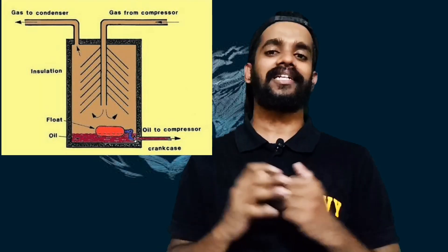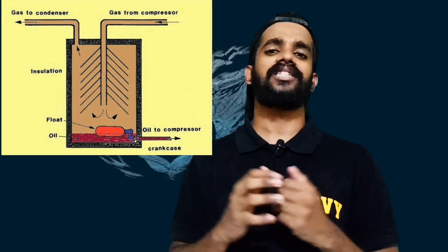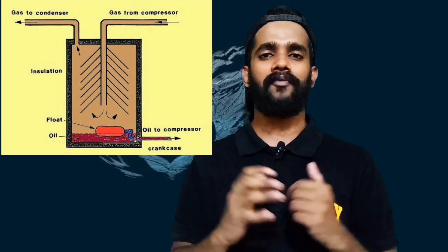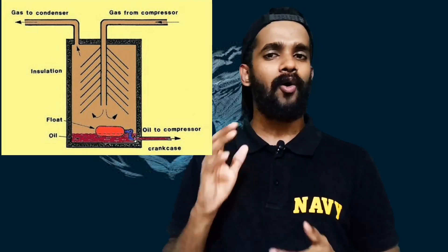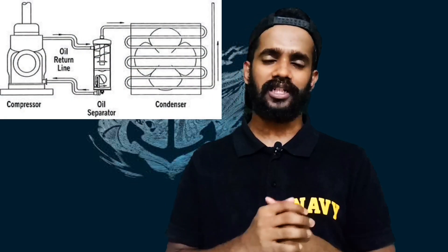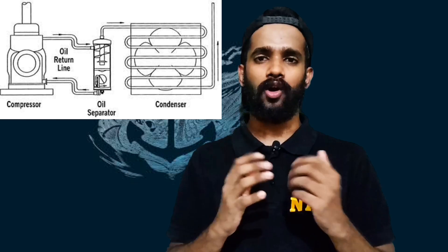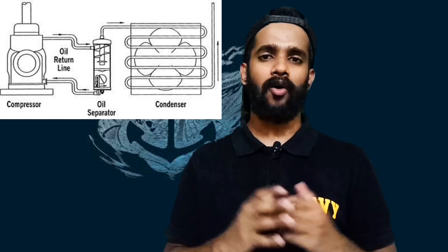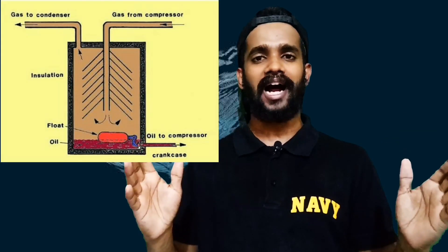You can now see a typical oil separator on screen. It is an impingement type of oil separator which has baffle plates. As you can see clearly from the diagram, it is a closed type of vessel with a series of baffles. The refrigeration entering the oil separator has high velocity because it has just been discharged from the compressor.